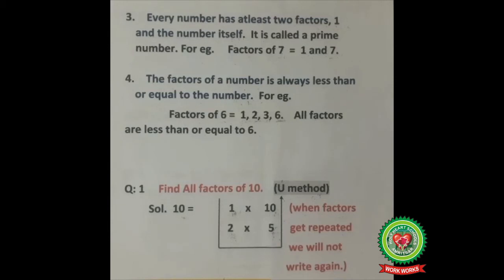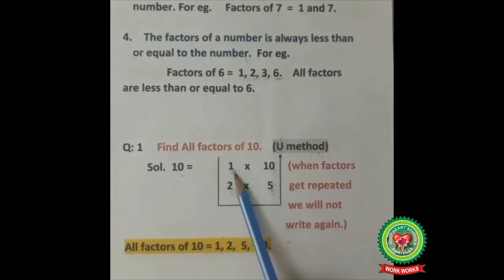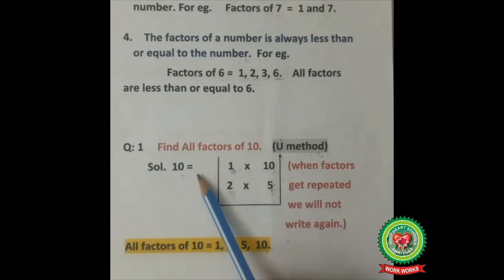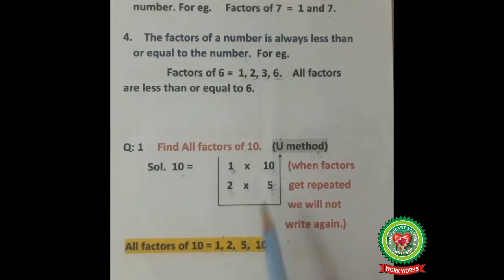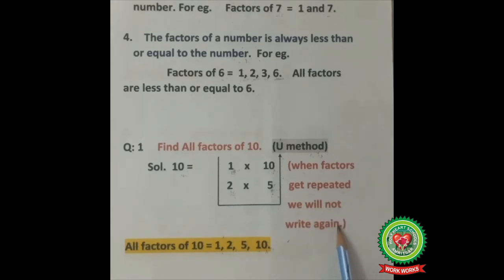Now we will learn to find all factors of a number using the U method. The number is 10. We start from 1, since 1 is a factor of every number. 10 is divisible by 1 giving 10 — so we write 1 multiply 10. 10 is divisible by 2 giving 5 — so we write 2 multiply 5. Is 10 divisible by 3? No. Is 10 divisible by 4? No. Is 10 divisible by 5? Yes, giving 2 — but the factors are already there, so we do not write them again. We turn the pairs like a U — this is called the U method.